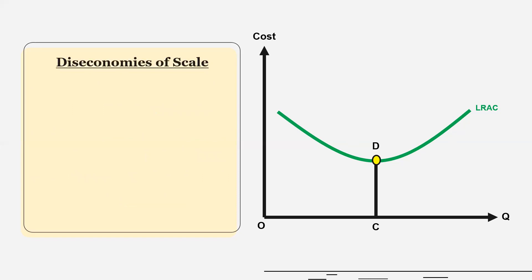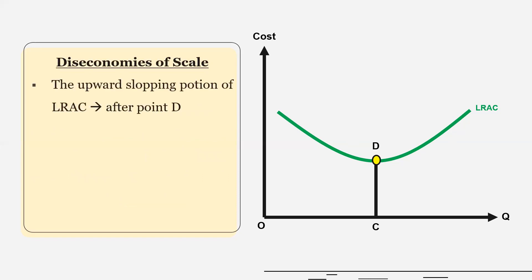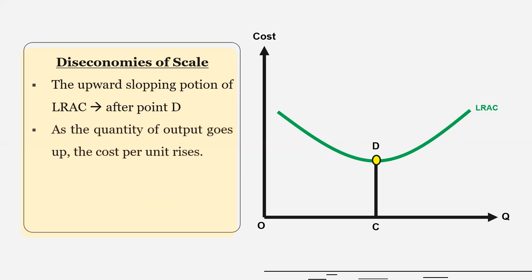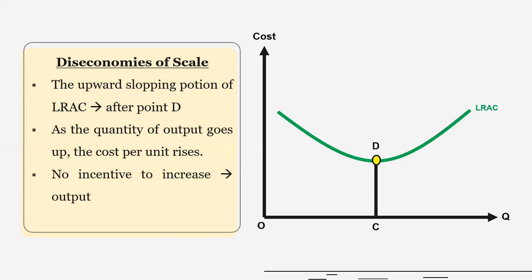Then we have diseconomies of scale. Diseconomies of scale is represented by the upward sloping portion of the long-run average cost curve. Here, as the quantity of output goes up, the cost per unit — that is, the long-run average cost — also increases. Therefore, producers don't have the incentive to increase output. So the downward sloping portion represents economies of scale and the upward sloping portion represents diseconomies of scale.